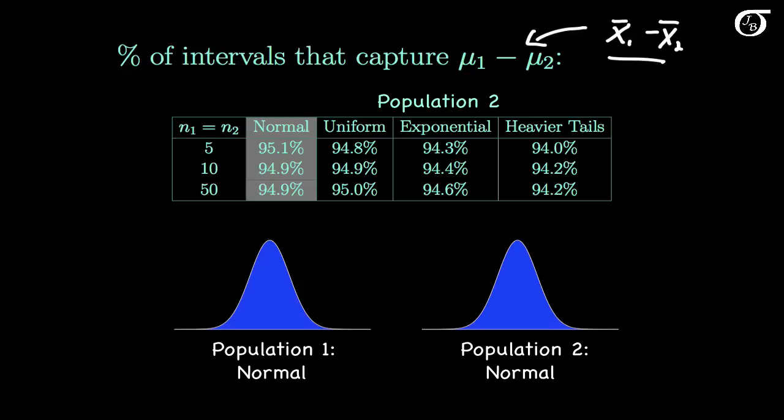To keep this video manageable, I'm going to look only at the equal sample size situation with sample sizes of 5, 10, and 50. As those sample sizes increase, the effect of a violation of the normality assumption is not as bad. For the unequal sample size situation, results are usually a little bit better than if both had the smaller sample size — for example, usually a little worse if both are 5 than if one is 5 and one is 12.